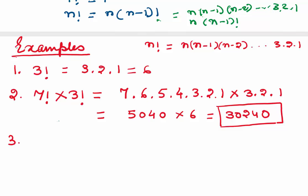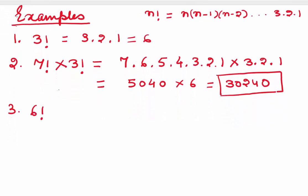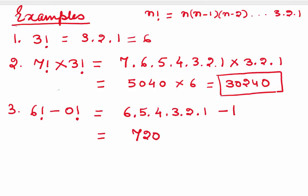What if we have to find 6! − 0!? We know 0! = 1. So first calculate 6! = 6 × 5 × 4 × 3 × 2 × 1 = 720. Therefore 6! − 0! = 720 − 1 = 719.